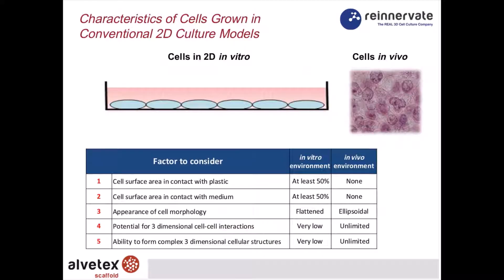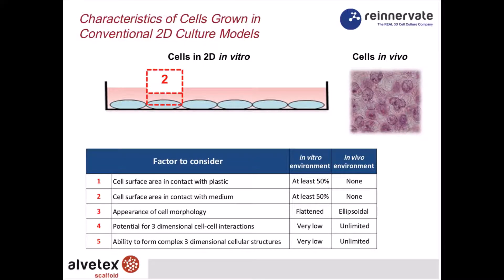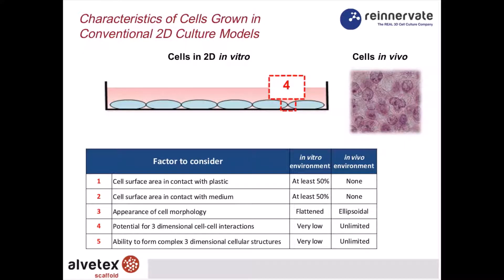We can see this in more detail: in a monolayer, an individual cell will have up to 50% of its surface against the polystyrene substrate and up to 50% against the medium. Cells require a flattened morphology, and the interaction between cells is minimized. There is no real opportunity for forming complex three-dimensional shapes or complex three-dimensional interactions with adjacent cells, as you would see in vivo.